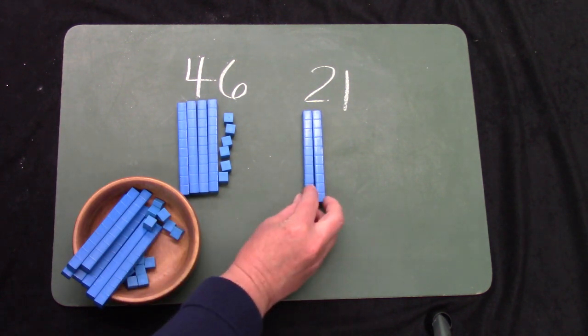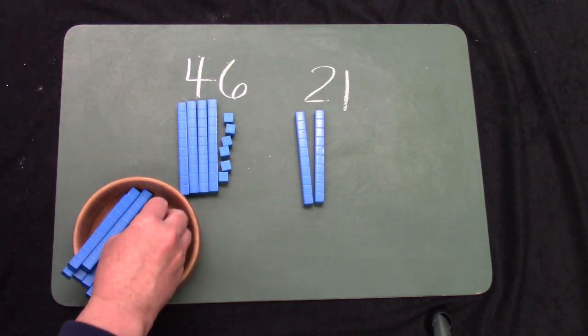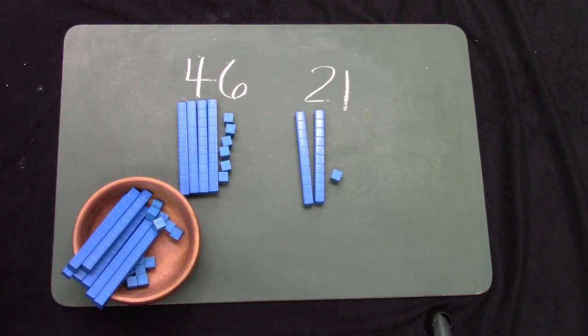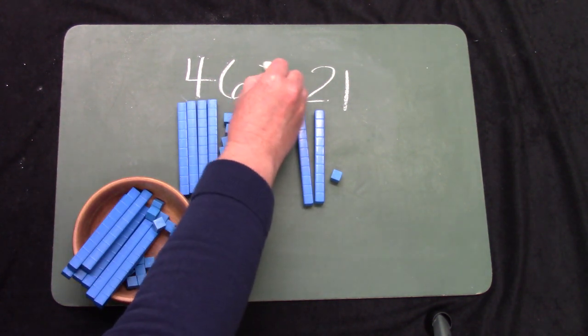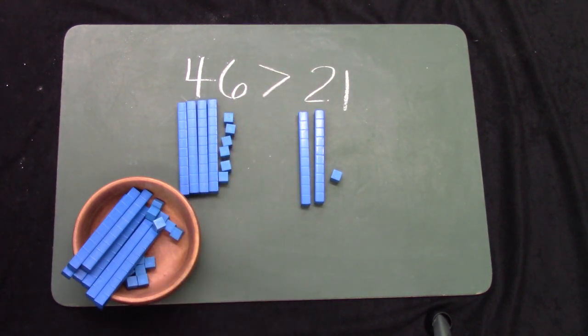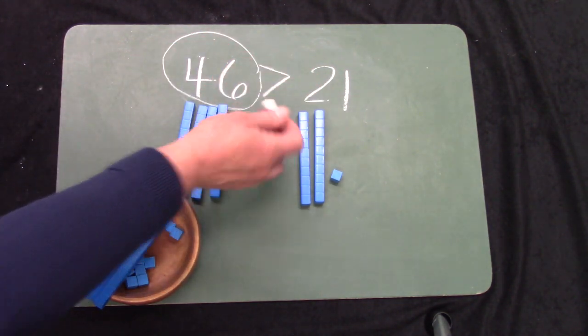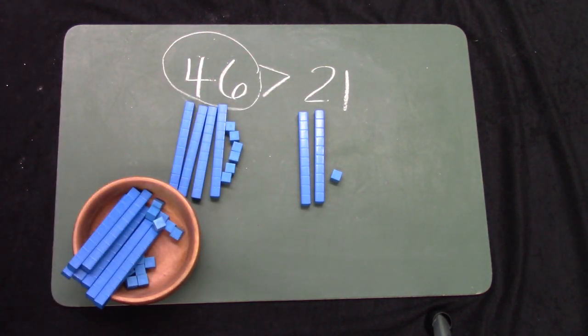For 21, we would have 2 groups of 10. 10, 20, and 1. Hmm. Which number is greater? That's right. 46 is greater. If I were to circle the greatest number, it would be 46. 21 is less than, or it is a smaller number than 46.